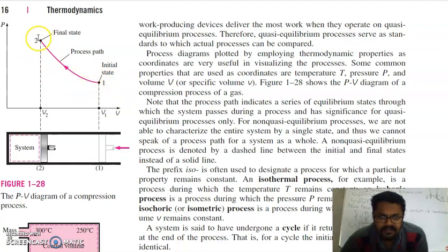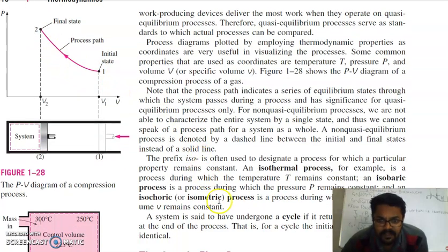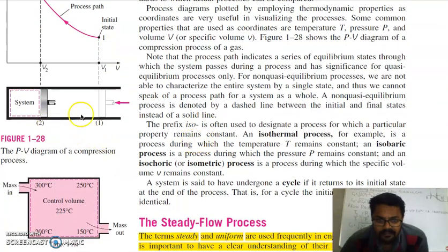So a process is said to occur when there is a change in state, or you can say properties, of the system. You can see here, this is from one to two. The piston has compressed your gas from one to two. At one, volume is larger; at two, volume is less, while pressure has reversed. The prefix ISO is often used to designate a process for which a particular property remains constant.